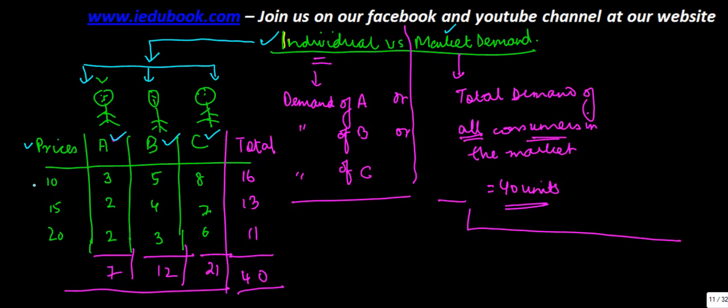Let's say at different prices - 10, 15, and 20 - A demands three quantity of a particular good, two quantity, and two. Similarly, at a price of 10, B demands three.